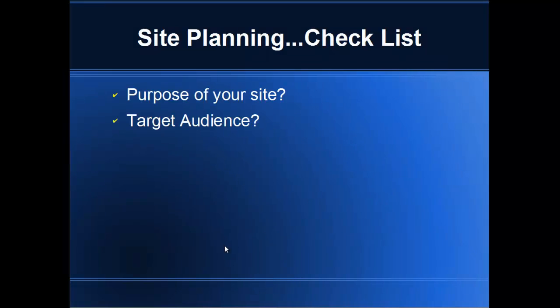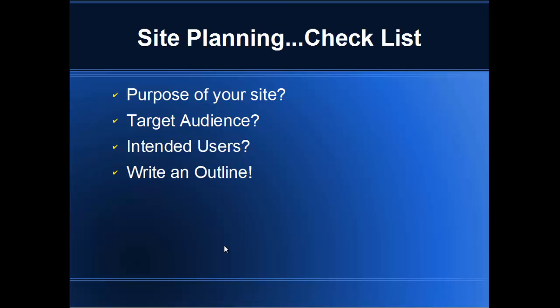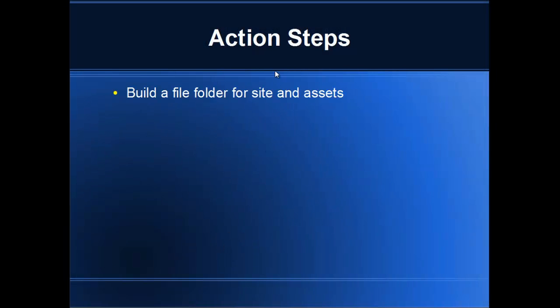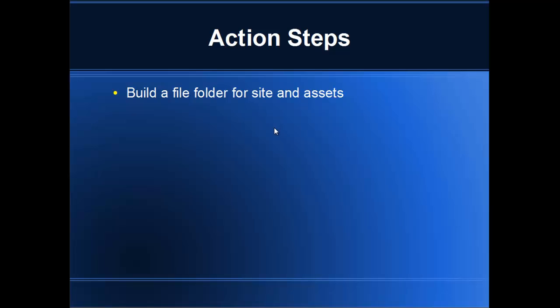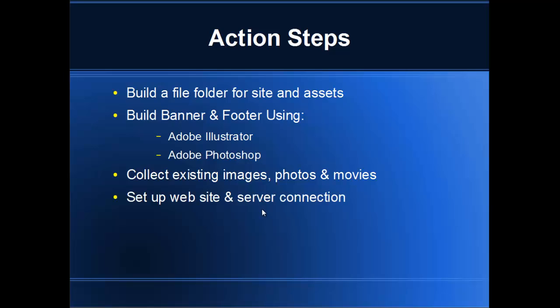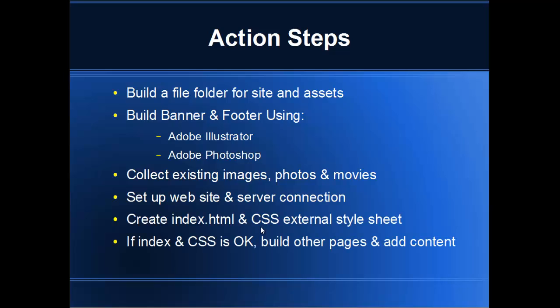Let's look at our site checklist: the purpose of our website, our target audience, our intended users, and again we have to write that outline out. Assets and media, any visually impaired users, and file management. Now these are our action steps. We've got to build a folder for our site and our assets and images. We've got to build a banner and a footer using Illustrator and Photoshop. We've got to collect all images, photos, and movies we're going to use. Set up a website server and connection for a remote server. Create an index and cascading style sheet - an external style sheet page. And if the CSS and the index are okay, then we can start building the other sites. Let's get started and let's have fun.